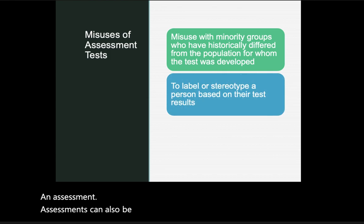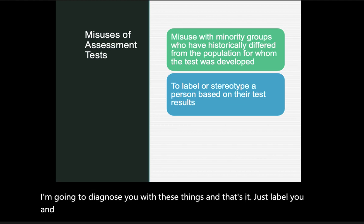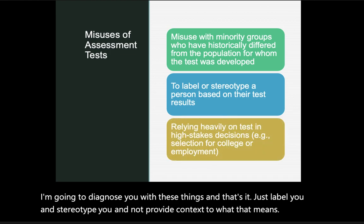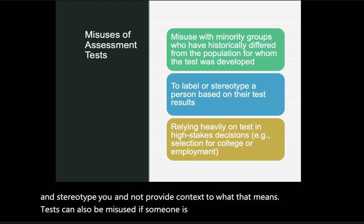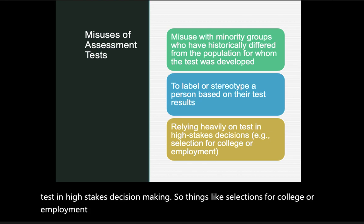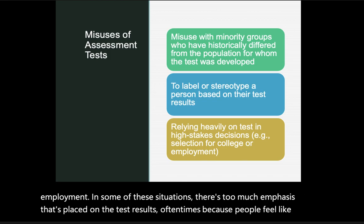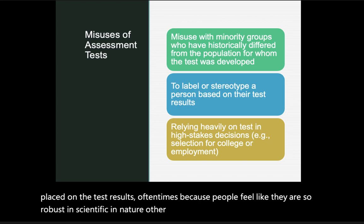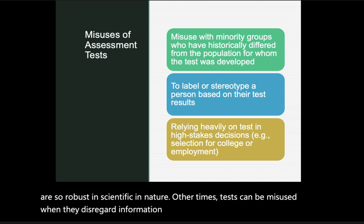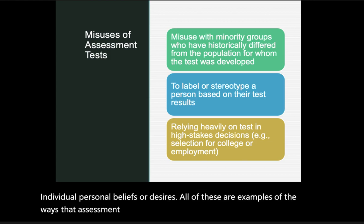Assessments can also be misused when they label or stereotype a person based on test results without providing context. Tests are misused when someone disproportionately relies on them in high-stakes decision-making — such as college or employment selection — placing too much emphasis on results because they seem robust and scientific. Tests are also misused when they disregard information that conflicts with a clinician's personal beliefs or desires. These are all examples of misuse that effective clinicians should move away from.